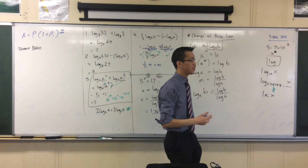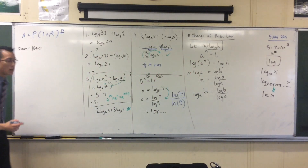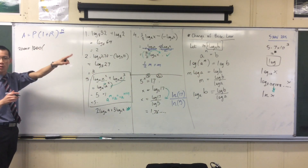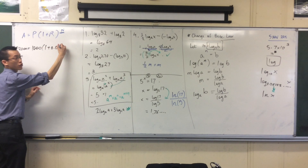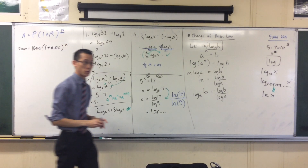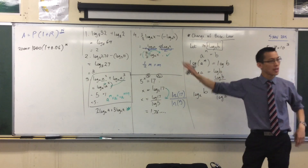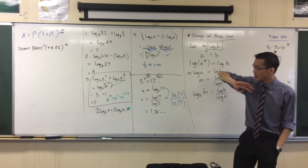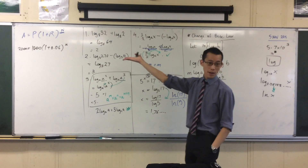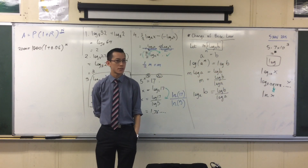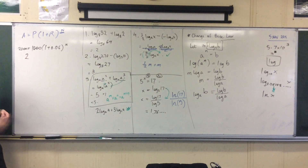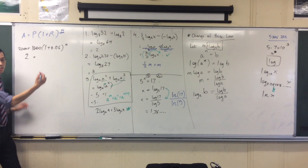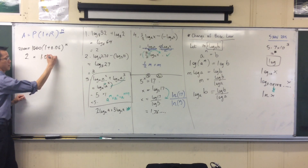If it earns compound interest at a rate of 6% per year — where do I stick that? That should be the rate, and because it's a percentage, I want to write it here as a decimal. So I'm going to write that as 1 plus 0.06. And then this gap here is the one I want to solve. I can simplify this a little bit. I can divide both sides by 1,000. So I can say 2 equals 1 plus 0.06, which is just 1.06 to the power of n.